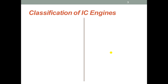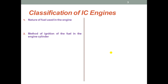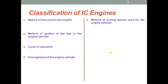We will now see some of the classifications of internal combustion engines. Here we will discuss a broad classification of IC engines. The first classification is based on the nature of fuel used. The second is method of ignition. The third is cycle of operation. The fourth is arrangement of the engine cylinder. The fifth is method of cooling system. The sixth is use of engines. And the last is speed of the engines. These are the seven broad classifications for internal combustion engines.